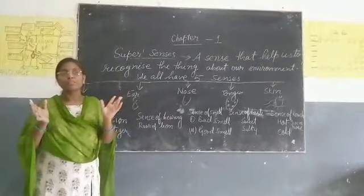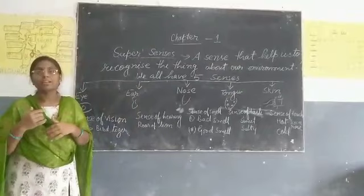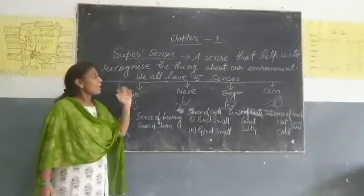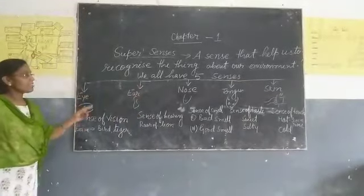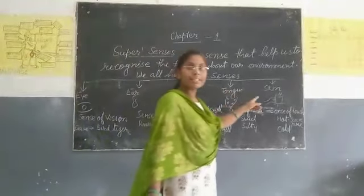We all have five types of senses: first, eyes, nose, tongue, and skin.